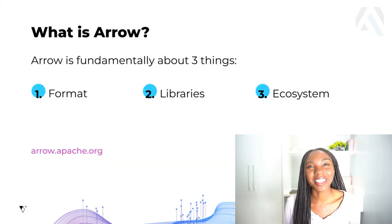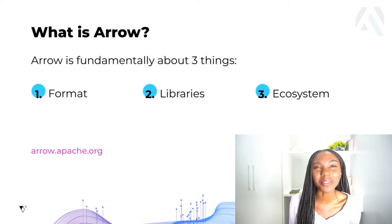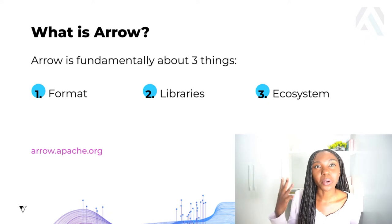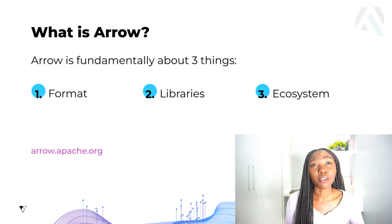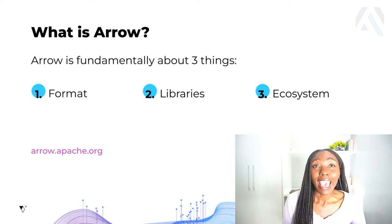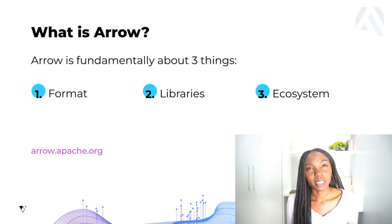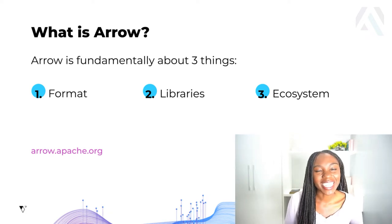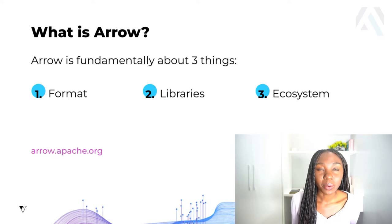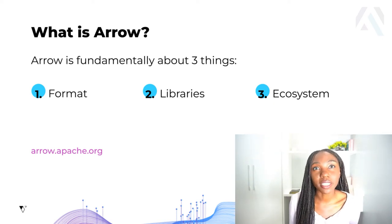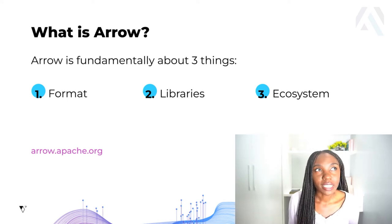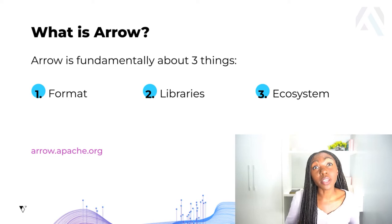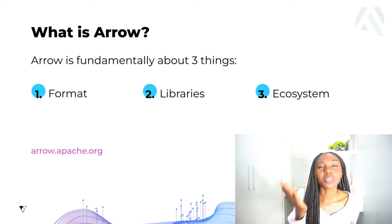You've probably guessed that the solution this group came up with was Arrow. Arrow is fundamentally about three core things. First, Arrow is a format. Second, Arrow is a group of libraries — specifically 12 different libraries at the moment. And third, Arrow is an ecosystem. Throughout the rest of this talk, I'm going to be looking at these three different parts of Arrow and how each of them addresses one or more of the problems we talked about earlier.